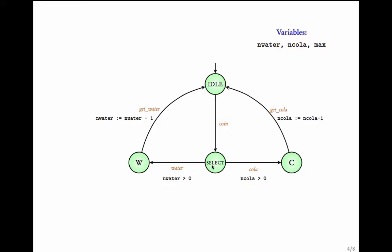From the select state, the machine can go to state w only if n_water is bigger than zero. Similarly, from select it can go to c only if n_cola is bigger than zero — this is a condition on the transition. If both are zero, we add a transition which returns the coin. So n_water > 0, n_cola > 0, and n_water = 0 and n_cola = 0 are conditions on these transitions, while n_water := n_water − 1 and n_cola := n_cola − 1 are assignments representing the effects of those transitions.